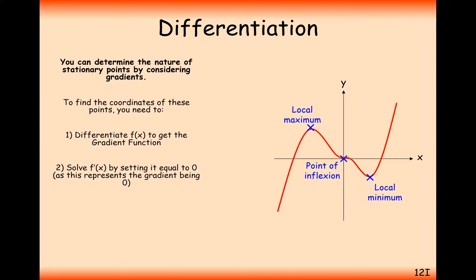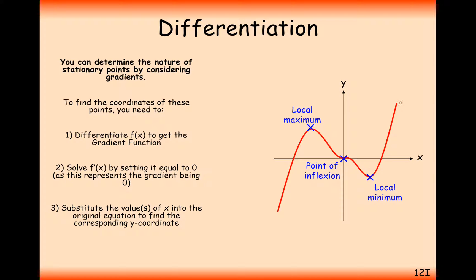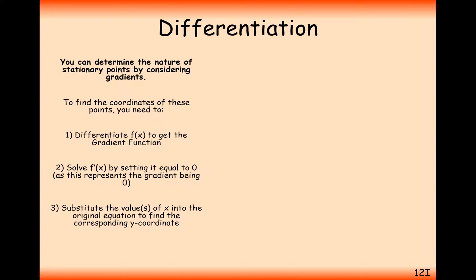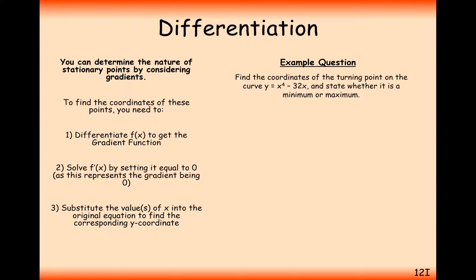Here is what we need to work out a stationary point. The first thing we do is differentiate f(x) to get the gradient function. At the stationary point, the gradient is going to equal zero, so we create an equation with the differential equal to zero and work out what values of x we need for those stationary points. Then we substitute the values into the original equation to get the y-coordinate, which gives us the coordinates of the stationary point.